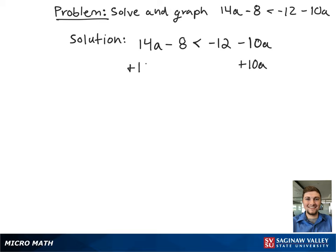we're first going to add 10a to both sides to get rid of the a term on the right-hand side, as well as adding 8 to both sides to get rid of the single term on the left-hand side.